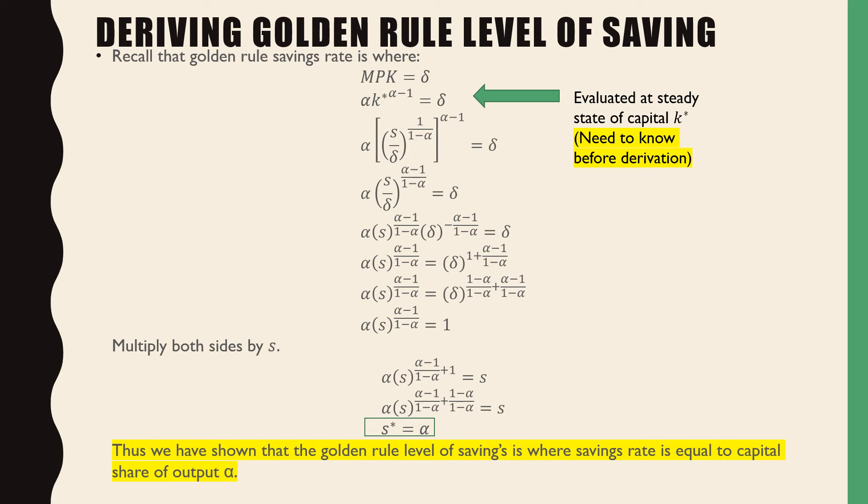The derivation should go smoothly up to a point where I make the note that you should multiply both sides by S. And after that, we should hopefully be able to show with a little bit more algebra that our golden rule level of savings is where our savings rate is equal to our capital share of output alpha. So I hope this helps.